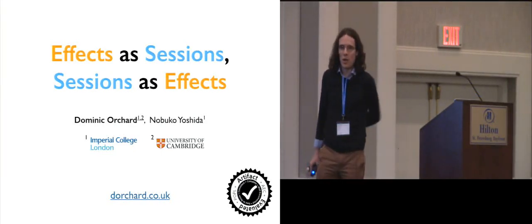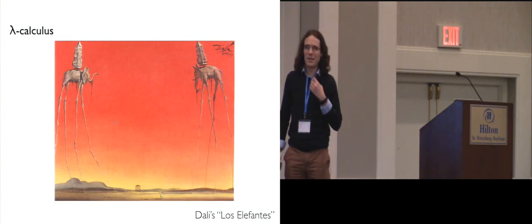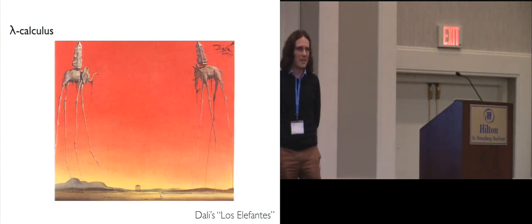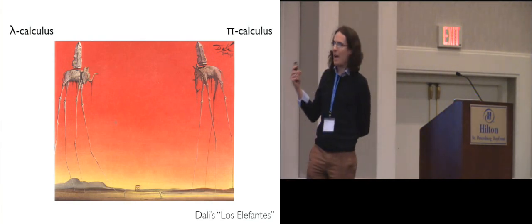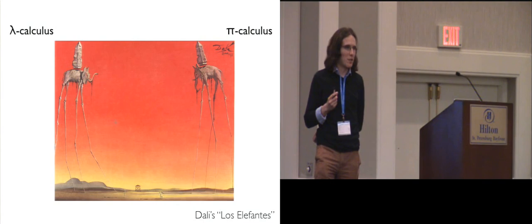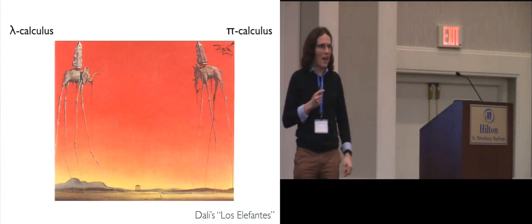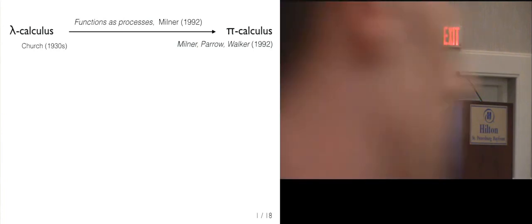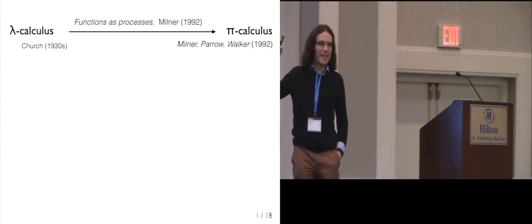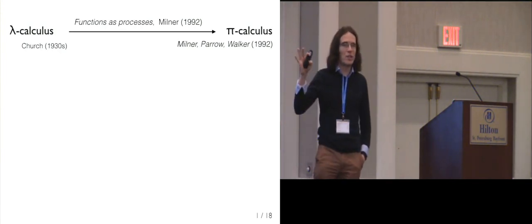This is joint work with Nabucco Yoshida, and I'm going to start by telling you a tale of two calculi: the lambda calculus and the pi calculus. The lambda calculus is a fundamental calculus of functions, and pi is a fundamental calculus of processes and concurrency. These two great fundamental calculi are actually quite similar, and this was formalized in 1992 by Robin Milner, who showed that you could take lambda terms and encode them into the pi calculus, representing functions as processes.